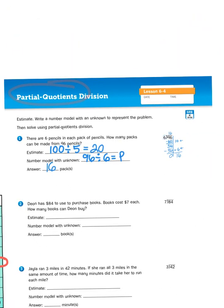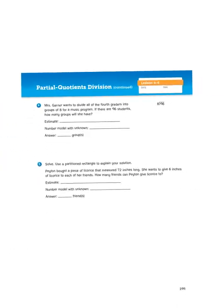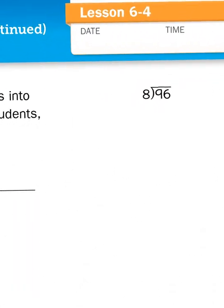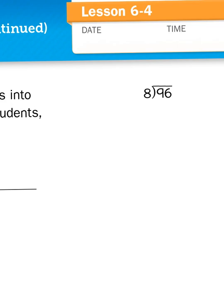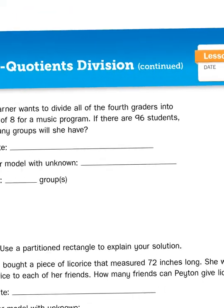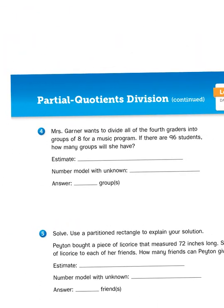Let's try another problem. I'm going to jump over to number 4 on page 199. I'm doing so because if you notice in my division algorithm right here, I'm dividing 96 again. Let's read the number story. It says, Mrs. Garner wants to divide all the fourth graders into groups of 8 for a music program. If there are 96 students, how many groups will she have?